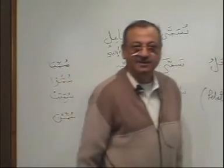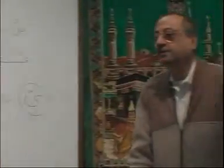Got the idea, brothers and sisters? I will try to keep reminding you. One more time — the rule: if there is one maf'ulun bihi and you make the fa'il into passive voice (majhul), that maf'ulun bihi will become naib fa'il. But if there are two maf'ulun bihis, then one will become naib fa'il and the other will remain maf'ulun bihi. Watch for it, brothers and sisters.